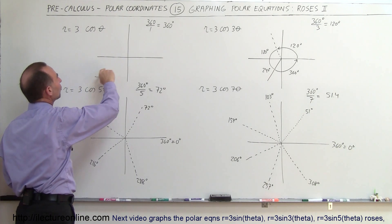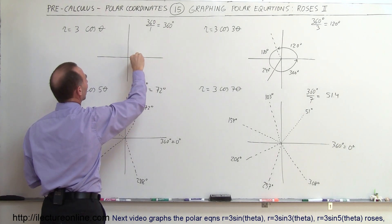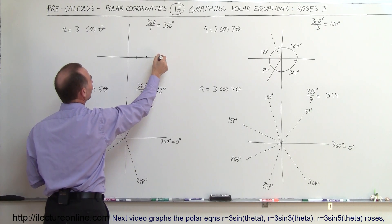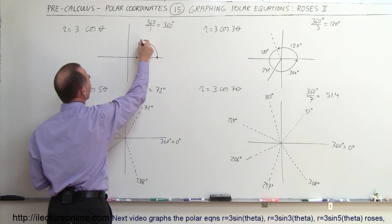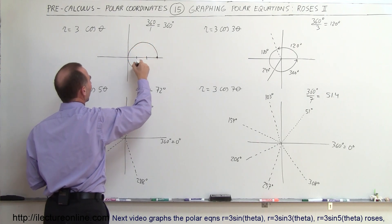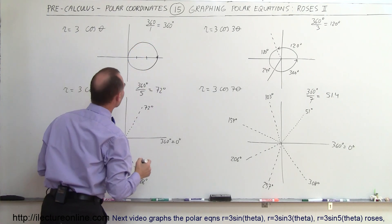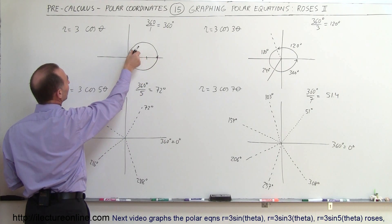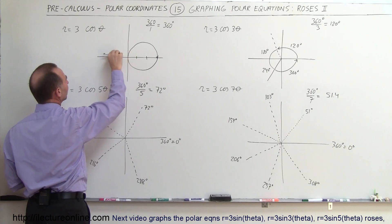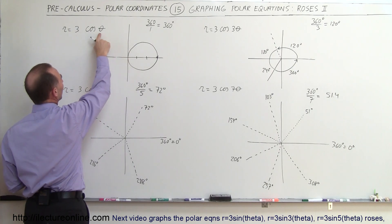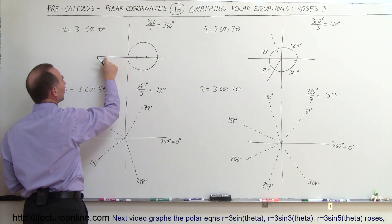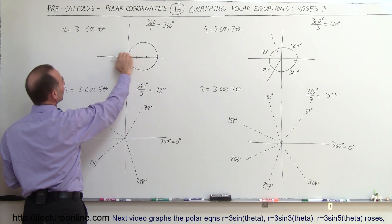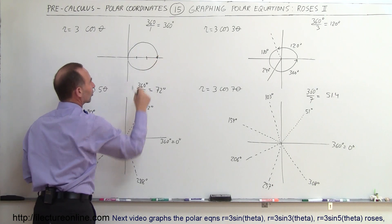For 3 times the cosine of theta — notice when theta is equal to 0, R will be 3, so that would be right over here. There's only one leaf, which means the leaf will look like a circle, coming around like this. Notice when we are at 180 degrees, the cosine of 180 would be minus 1. So when we're pointing in that direction, we are back 3 units in the opposite direction — negative 3, when pointing that way, puts you right back in the circle. That's how we graph that particular graph.